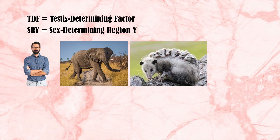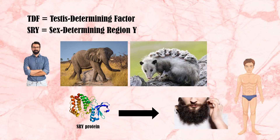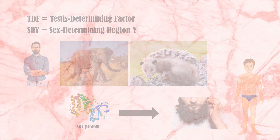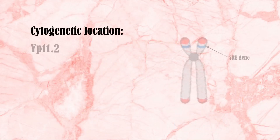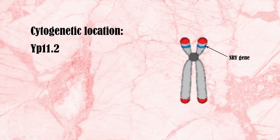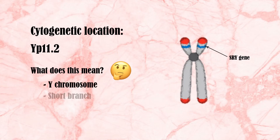It provides instructions for making the sex determining region Y protein, which causes the fetus to develop male phenotypes and prevents the development of human reproductive structures. The SRY gene forms the entire functional protein, and its cytogenetic location is Yp11.2, meaning it is located in a short branch of the Y chromosome at position 11.2.